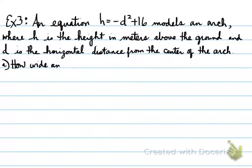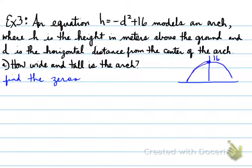Part a, how wide and tall is the arch? To understand this question, we kind of need a little bit of a drawing. We need to find the zeros because we need to know how wide that arch is. We need to know where it hits the ground so we can determine the width. We know that the height is going to be at 16 because the equation says it's from the center. So, that means the y-intercept is at the height, maximum height of the center.